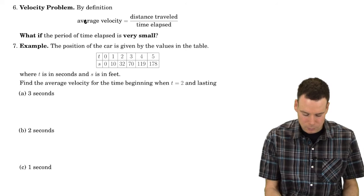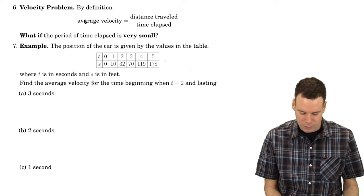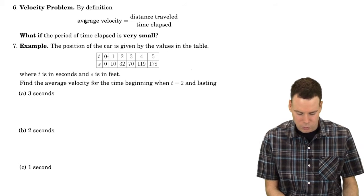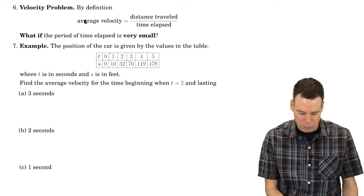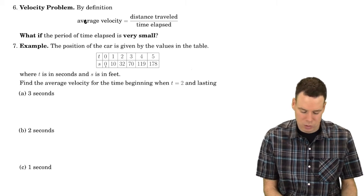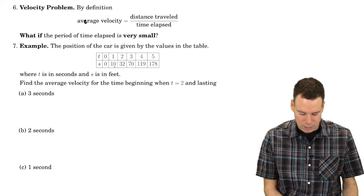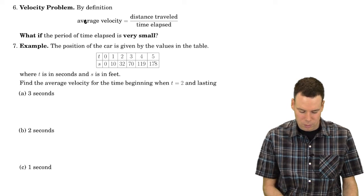Let's look at an example. Suppose I have a car position given by a table of values. In the first row we have times and in the second row we have positions. At time 0 it's at position 0. At time 1 second it's at 10 feet. At 2 seconds it's at 32 feet, and so on.